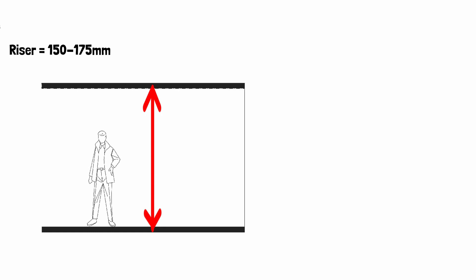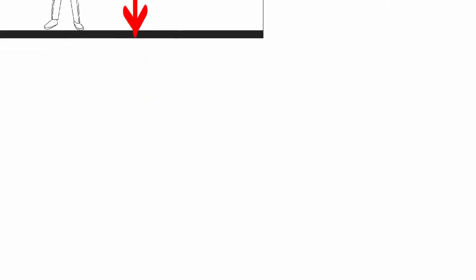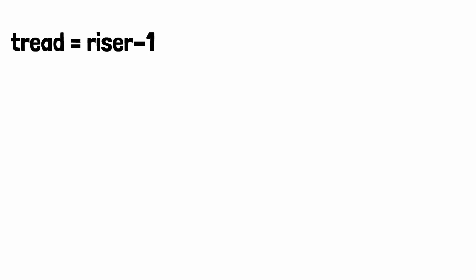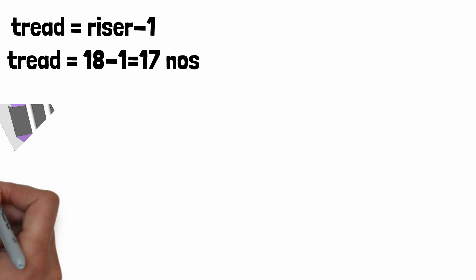Let's assume the floor height is 2.7 meters. Then we need 18 risers. After finding the number of risers, we can move on to the tread. Finding the tread is easy — just subtract 1 from the riser number, which gives us 17.